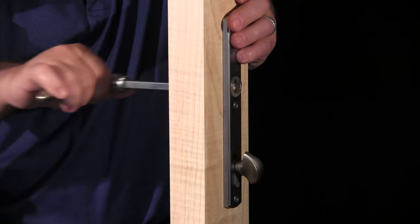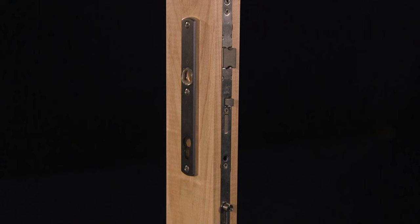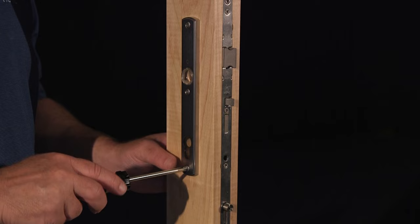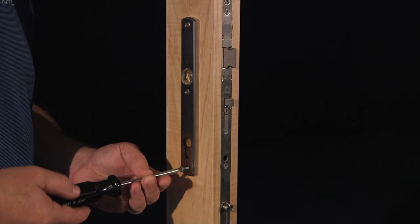Once it is removed, pull the outside handle and shaft out of the lock. Now that both handles are off, you can now carefully remove the backplate screws from the interior backplate and gently take away both backplates and gaskets from the face of the door.